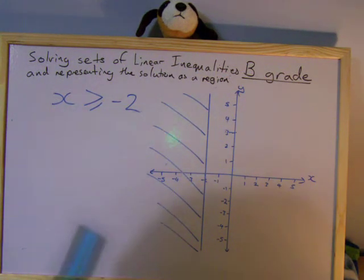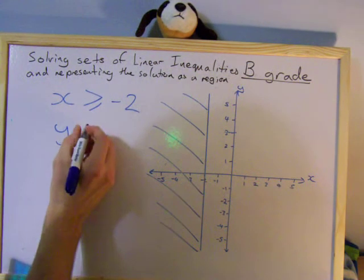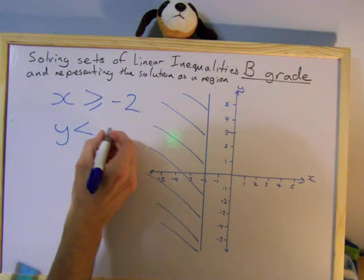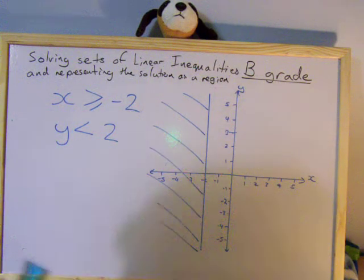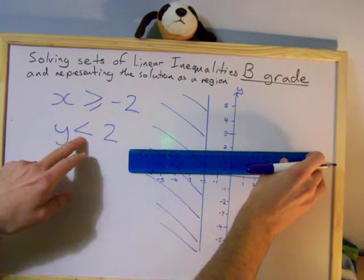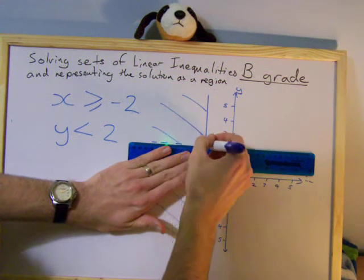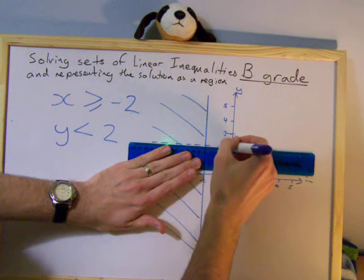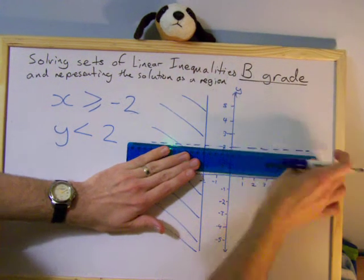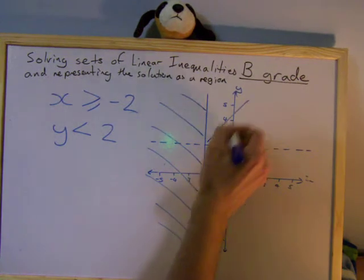I'm going to now set a second condition which is working at the same time as the first one. And this can happen in questions. So now I'm going to say that y is less than 2. If y is less than 2, I look at the line of y equals 2, which is that one. It's less than, so it can't include it. So that's going to be a dashed line that goes through it. And it's less than, so everything below it is okay. Everything above it is not okay.